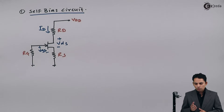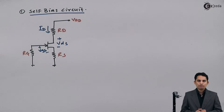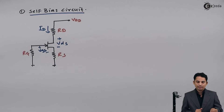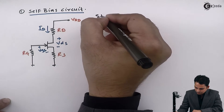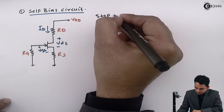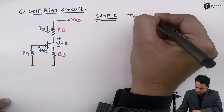The approach to find out DC points for JFET is quite different from the BJT. In JFET, we will make use of transfer characteristics. So step 1 will always be to plot the transfer curve.